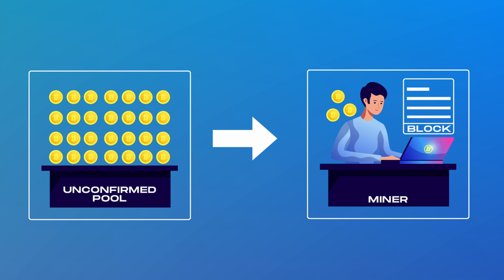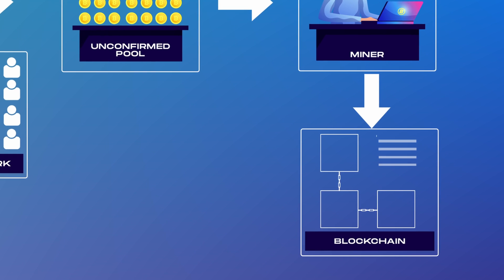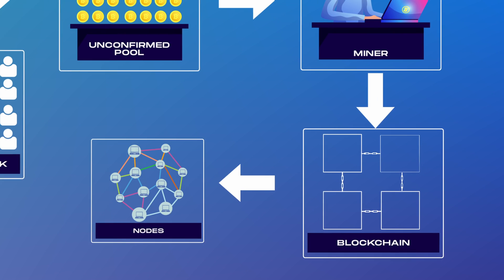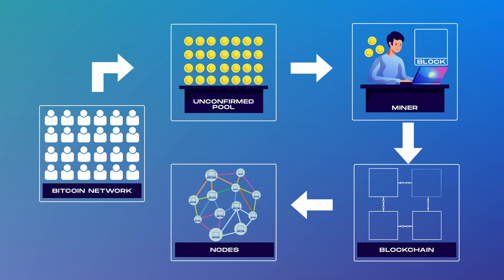Once the block is full, verified, and confirmed, it is placed on top of already existing blocks, forming a chain of blocks called a blockchain, and sent to thousands of computers around the world called nodes.